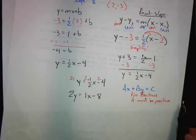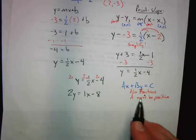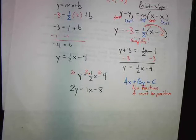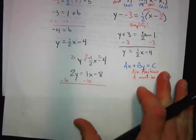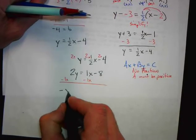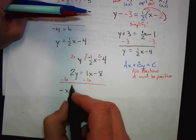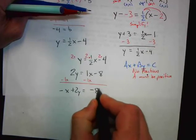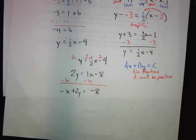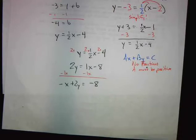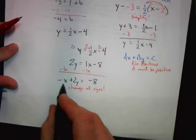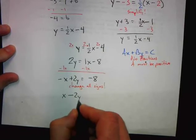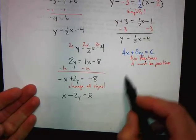We no longer have any fractions — all fractions are gone. Now we put it in the order Ax plus By equals C, so we subtract x from both sides: we get negative x plus 2y equals negative 8. But remember the second rule — A must be positive. So we change all the signs, giving us x minus 2y equals 8. And that is in standard form.